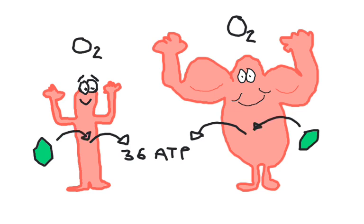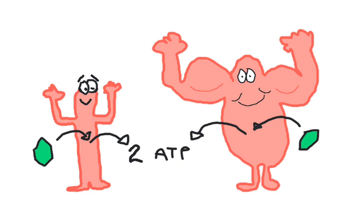However, when pushed to peak performance and oxygen levels are not adequate, either one of these cell types will switch to anaerobic respiration, producing only two ATP for every glucose burned. This is less efficient. However, more ATP can be produced all at once when undergoing anaerobic respiration, thereby producing the maximal amount of force possible.